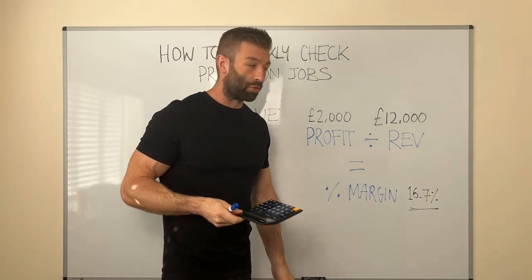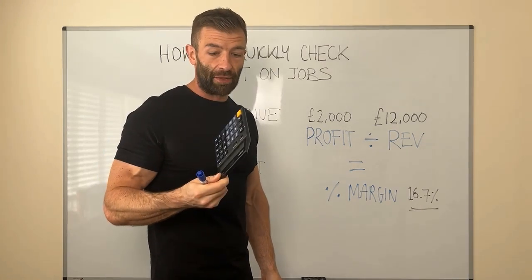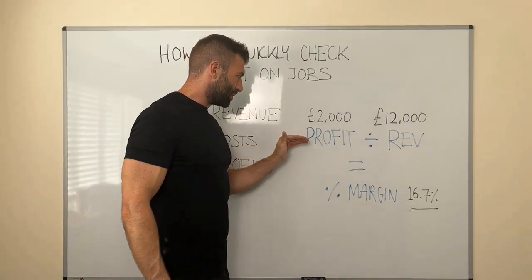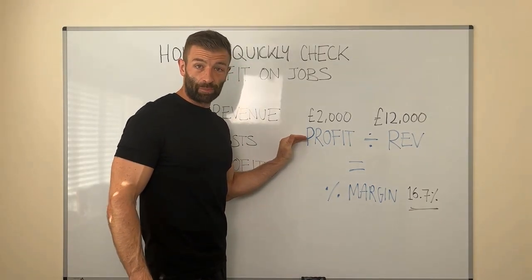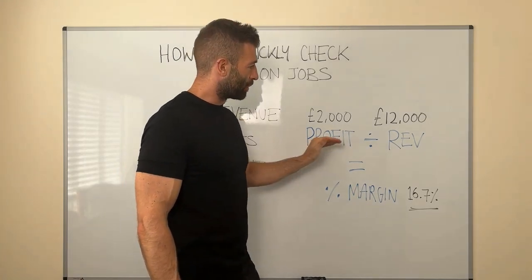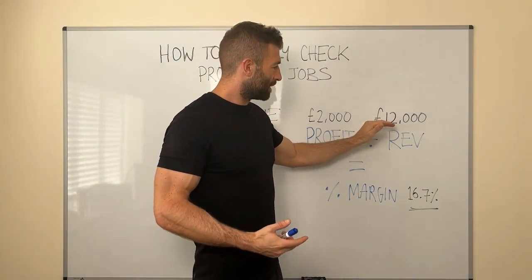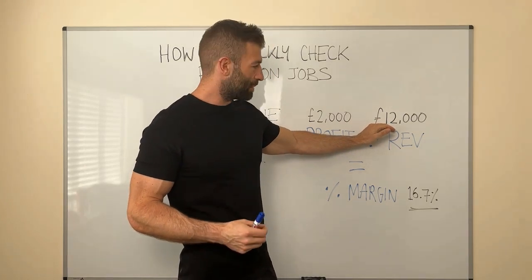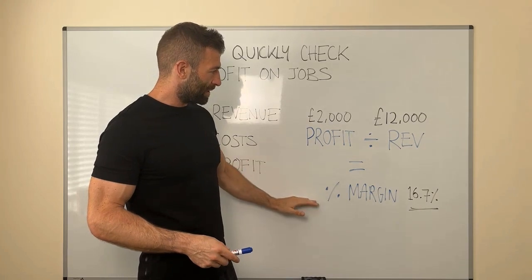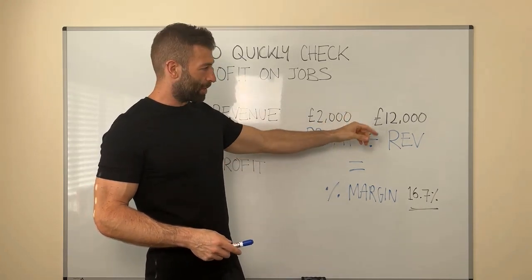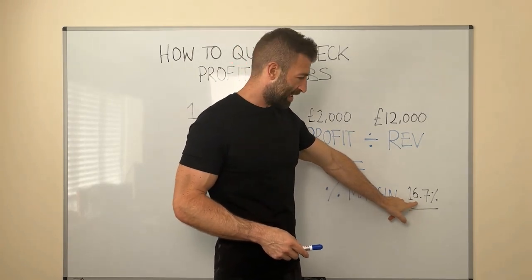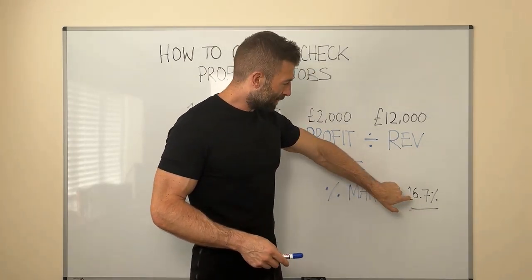Invest £3.99 in a Casio calculator — you don't need to be a genius, you just need to know how to push some buttons. Take your profit figure: let's say you had a profit of £2,000 on the job once you've worked out your costs. The customer, for example, paid you £12,000 excluding VAT. You divide the profit by the revenue — £2,000 divided by £12,000 — and that gives you a margin of 16.7%.